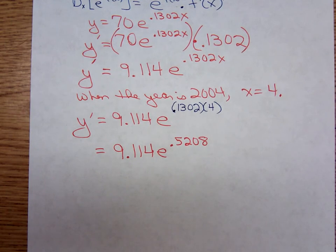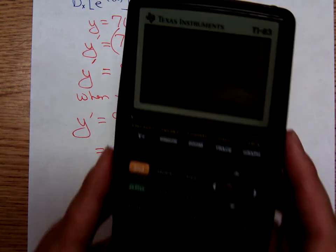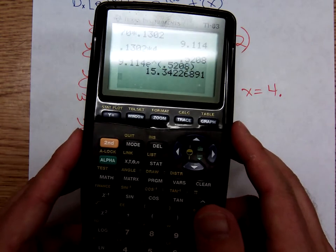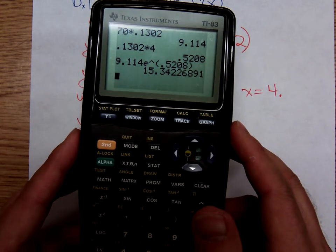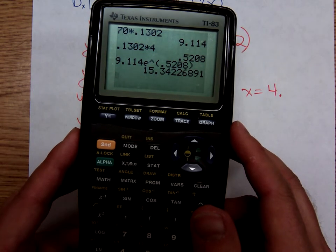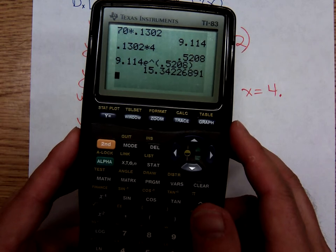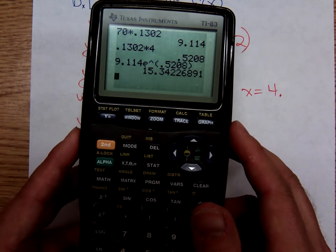Punching this in, let's see if I can get it to show. There it is. I'm getting 15 point... They want it rounded to the nearest thousandth, so that would be 342.